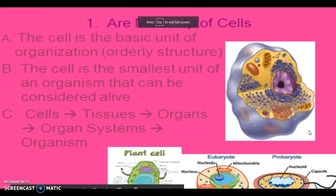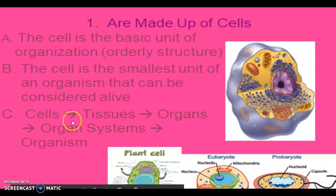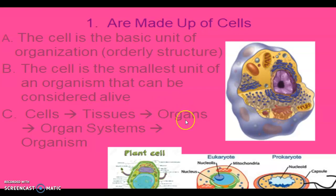The first characteristic of life is that all organisms are made of cells, and the cell is the basic unit of organization — meaning orderly structure. Cells come together to make tissues, tissues come together to make organs, organs work together in organ systems, and then your organ systems work together to make the organism.